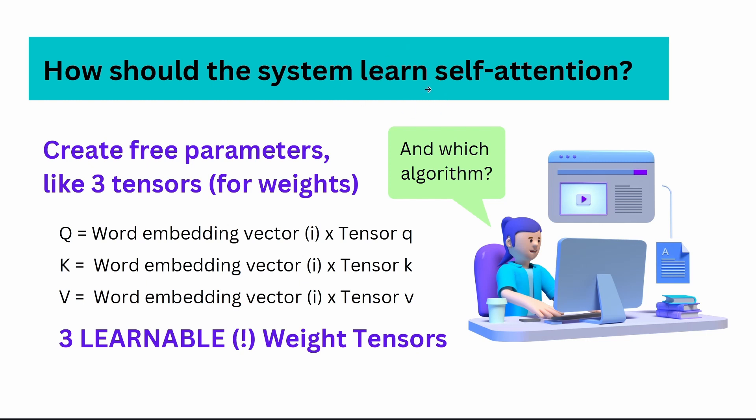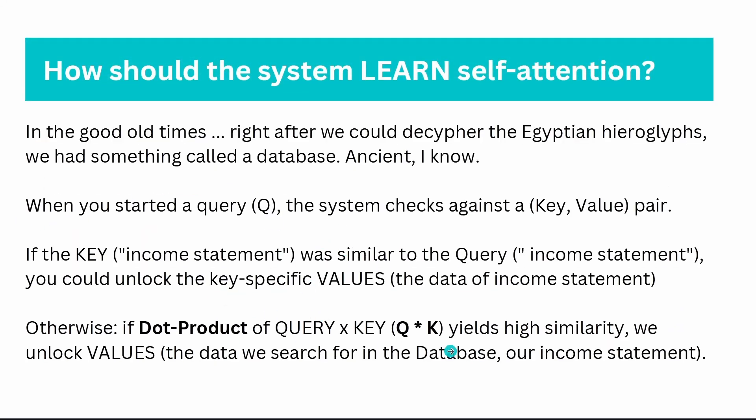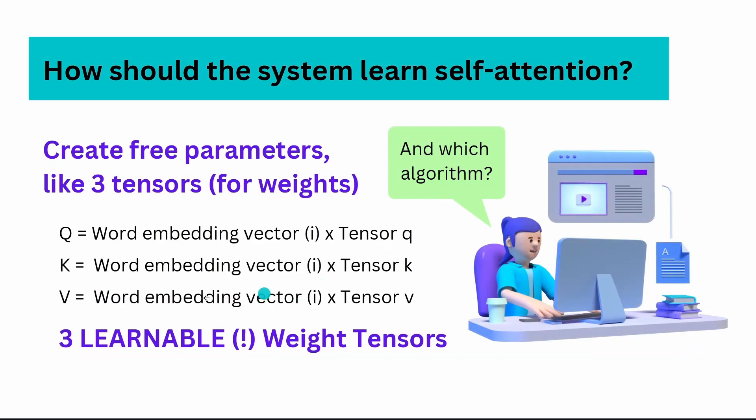How should the system learn self-attention? We need three parameters. Three learnable tensors. You might say, why three? Well, at first we have to calculate a similarity measure dot product, so we need at least two. And then we want to unlock some values. I have now a certain tensor, a free defined tensor that I start with. This is Q. Then you have a tensor K, like key. And then we have a tensor that references V, and you know that it stands for values.